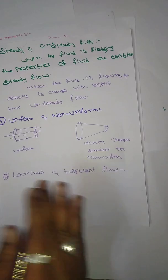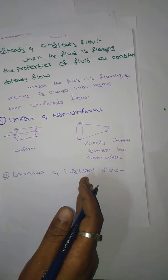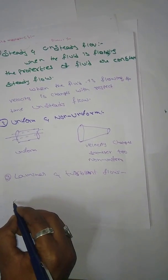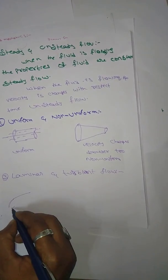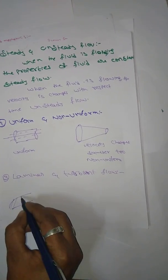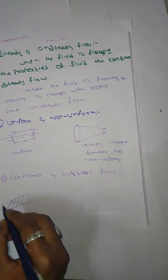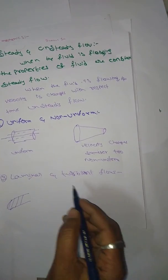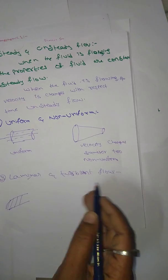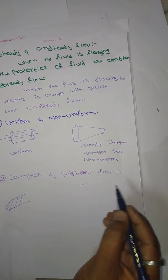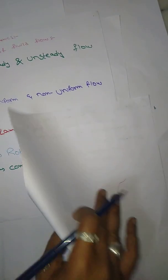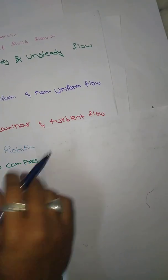What is laminar flow? We have to put a layer in the liquid — laminar flow is layer by layer. Turbulent flow is not layer by layer. Layer by layer is laminar flow; turbulent flow is just simple mixing.